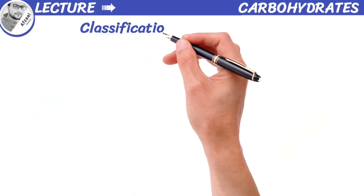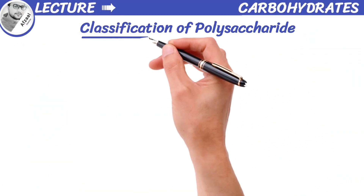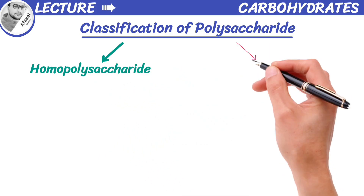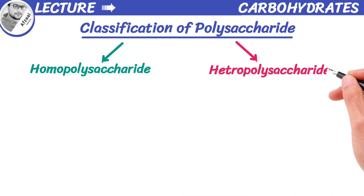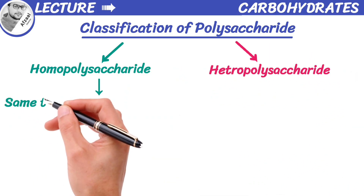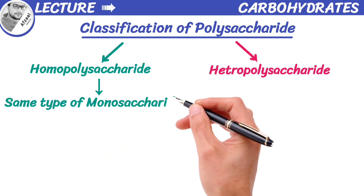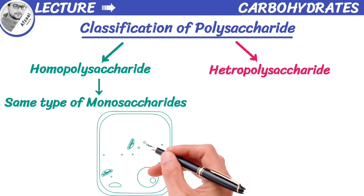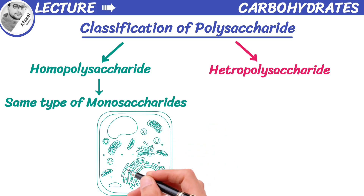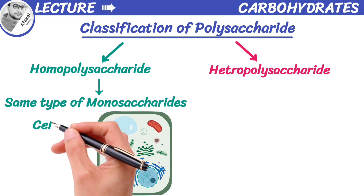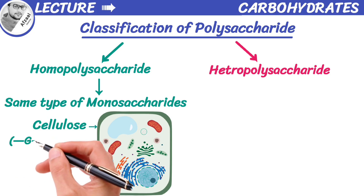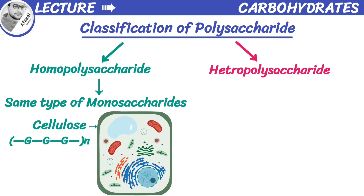Polysaccharides can be classified into homopolysaccharides and heteropolysaccharides, depending upon the type of monosaccharides they contain. A polysaccharide that contains the same type of monosaccharides is known as a homopolysaccharide. For example, cellulose is an important structural component of plant cell walls, consisting of a linear chain of several hundred to many thousands of glucose units.